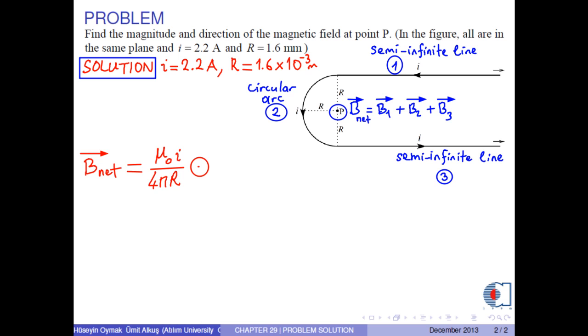The magnetic field of the circular arc is mu 0 times i over 4 pi r times phi, where phi is pi radians in the figure. And the direction is again out of the screen.